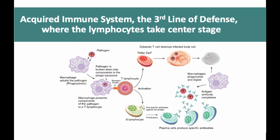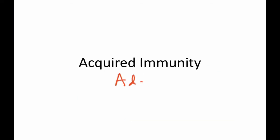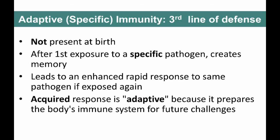Hi folks. Time for our discussion of acquired, also known as adaptive immunity. The adaptive or acquired immune response is not present when we're born. It develops in response to our exposure to various kinds of molecules in our environment.